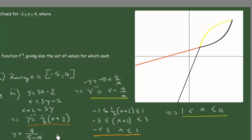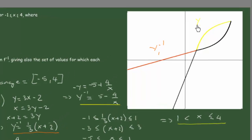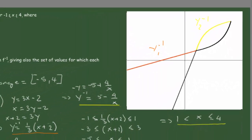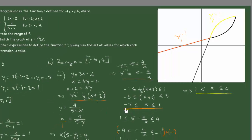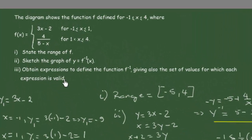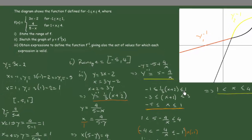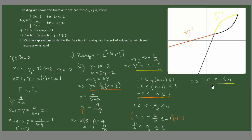As you can see on the graph, y₁⁻¹ is the orange function defined from -5 to 1, and y₂⁻¹ is the yellow function defined from 1 to 4. In answering question two we also answered question three, since we have identified the set of values for which each inverse expression is valid: the first inverse is valid on [-5, 1] and the second is valid on [1, 4].